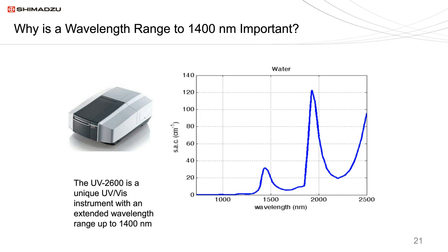Welcome to the second part of our webcast where we'll talk about applications and accessories. The UV-2600 is a unique instrument with an integrating sphere capable of going up to 1400 nanometers, making this UV visible instrument capable of going a significant distance into the near infrared. The near infrared region between 900 and 1400 nanometers — a clean region free of water interference — is very important to the telecommunications industry, the optics and coatings industry, and the nanomaterials industry.